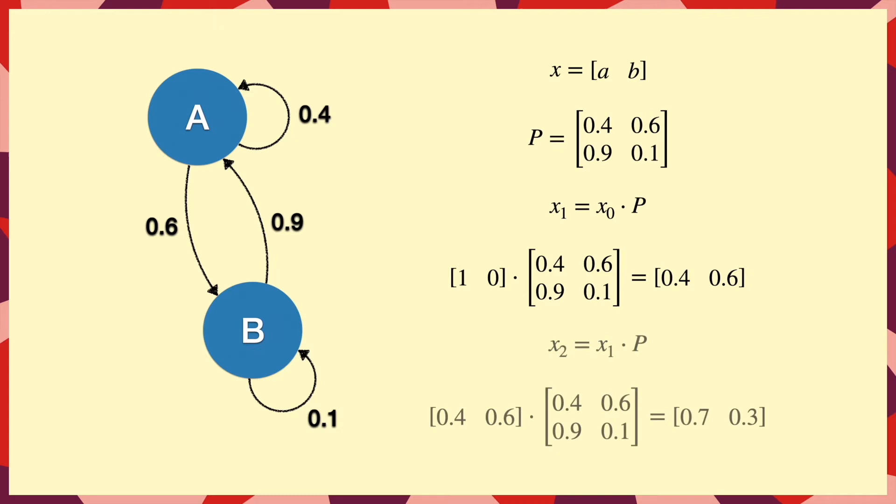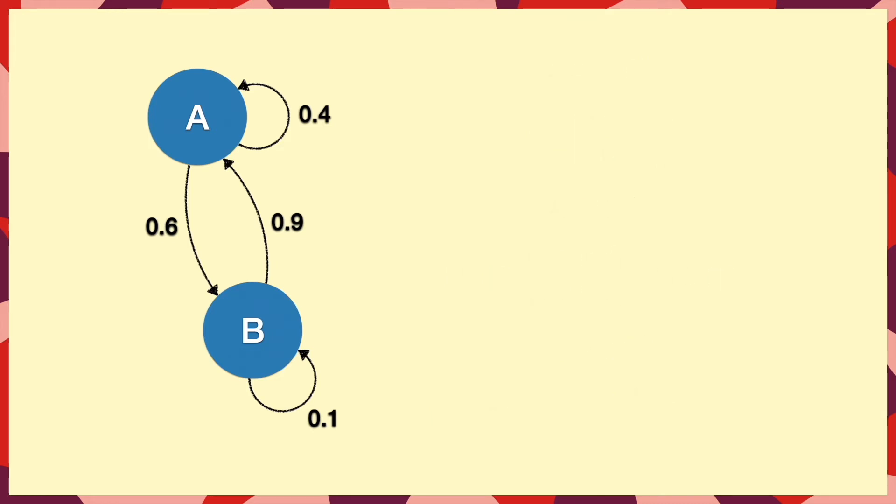Then if we want to take a second step in the chain, we can just repeat the process, and we get a 0.7 probability of being at A, and 0.3 probability for B. But what we're interested in is how much time we spend in each state in the long run, and this is described by something called the stationary distribution.